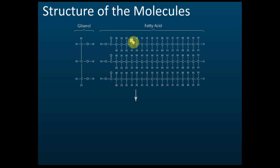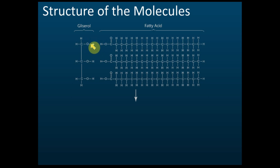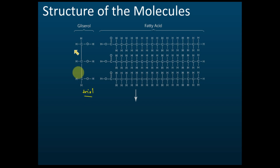A fat molecule is formed between glycerol and fatty acids. This is a glycerol — we can see that there are three OH groups here. This three OH group is called the hydroxyl group, which is the functional group of alcohol. So glycerol is an alcohol, but it has three hydroxyl groups, making it a triol — three carbons each with a hydroxyl attached. This is called a triol, and we call it glycerol.